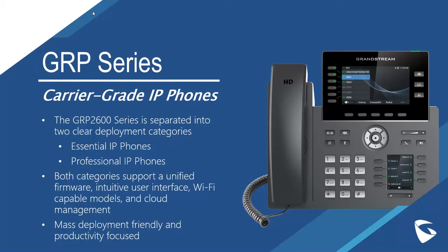Let's drill down a little bit into the GRP series, our latest generation of desktop IP phones — we call it our carrier-grade IP phones. The GRP 2600 series is separated into two clear deployment categories: our essential IP phones, which are more price-focused with essential call handling features, and our professional IP phones, which are a little bit more expensive but have more advanced features for a more advanced user. Both categories support unified firmware, intuitive user interface, Wi-Fi-capable models, and cloud management. These devices are mass deployment-friendly and, for the user, productivity-focused. We really wanted to deliver something clean, easy to use, and focused on helping the user excel at their day-to-day tasks and handle calls more efficiently.